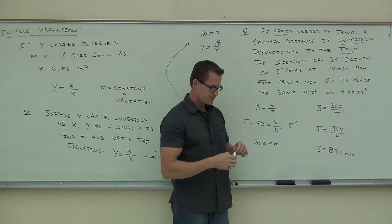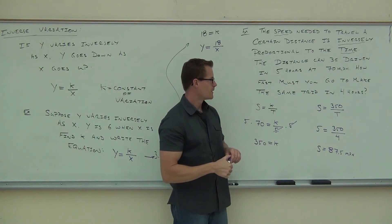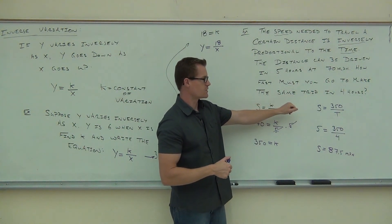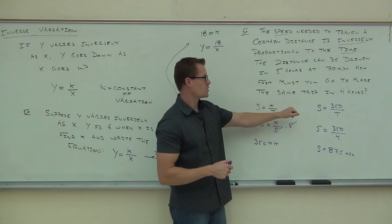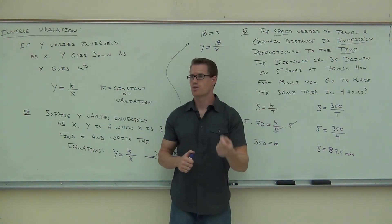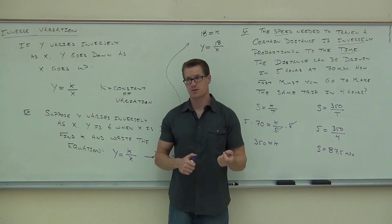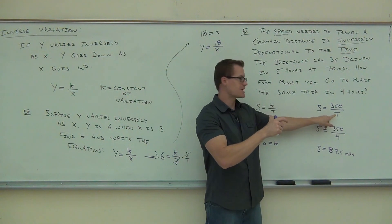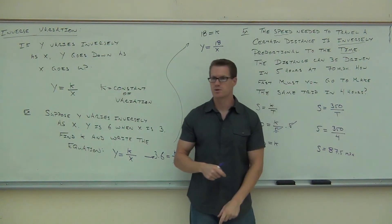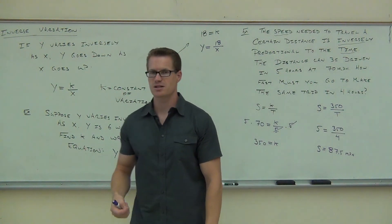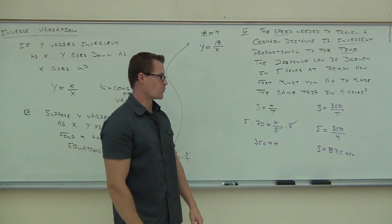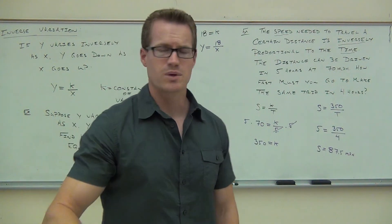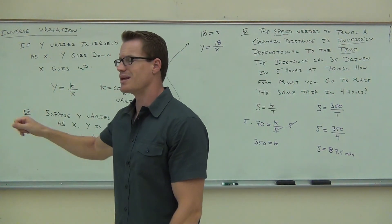One other thing — instead of asking how fast you'd go to make the same trip in four hours, if I said you're going 90 miles per hour, could I ask how long it's going to take you? I could. Notice that time would be your variable — you'd multiply by T on both sides and then divide by your speed. That's an exercise I'll leave for your homework. So to summarize: directly means K times, inversely means K over — we set up our equation and then use it to solve.